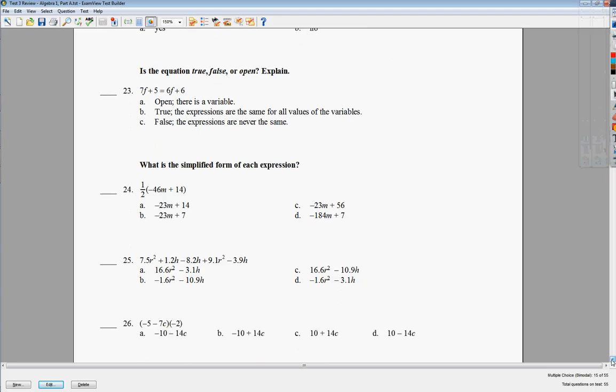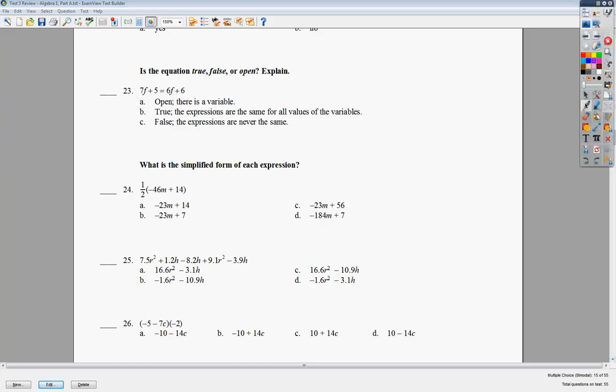The next question, number 23 says, Is the equation true, false, or open? And then they even say explain, but they give you all the possible explanations. That's the problem with this type of question when you have multiple choice. You'll notice that it has variables in it. If it has a variable in it, this could be true in some situations, and then it could be false in others. But we don't have to know any of that. Anytime you see a variable, it's always open. Because it could be one or the other. We just don't know.